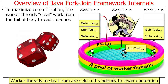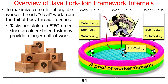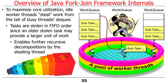Tasks are stolen in FIFO order from the tail of busy threads' deques. The older stolen tasks at the tail tend to have larger units of work — remember, bigger chunks are at the bottom. Stealing a bigger thing lets you recursively decompose it in another thread of control, allowing threads to initially work on big things and split them down to smaller things, producing a more balanced tree of processing.